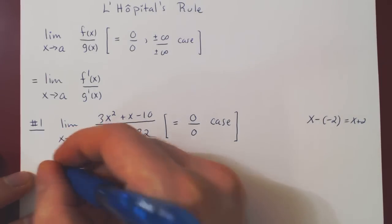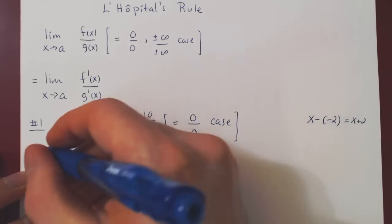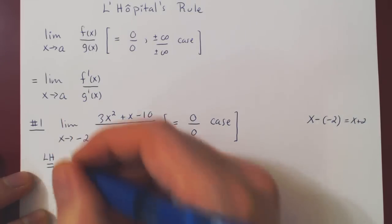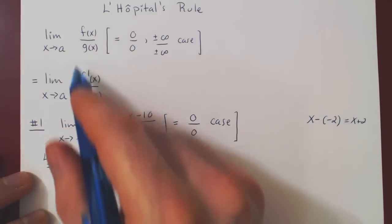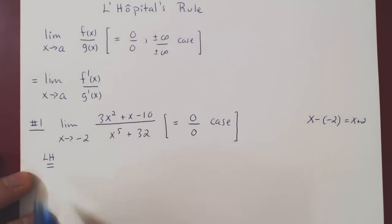And every time you use L'Hopital's rule, above your equal sign, write L H to specify explicitly that you're going from this limit to the new limit using L'Hopital's rule.